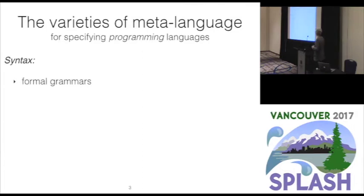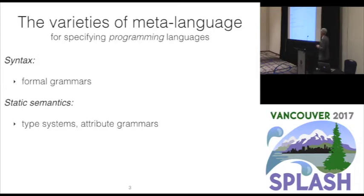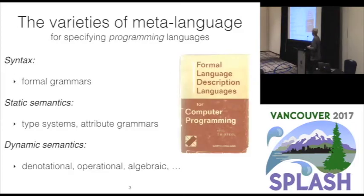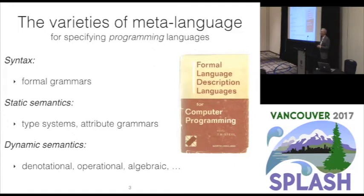What are meta-languages? We have lots of meta-languages around, and I apologize to the meta-modeling community because I'm going to be restricting attention to what I know best — meta-languages for specifying programming languages, and textual meta-languages at that. For syntax we have formal grammars; for static semantics people quite like type systems and attribute grammars. For dynamic semantics there's much more choice: denotational, operational, algebraic approaches, and hybrid approaches. Back in the 1960s, meta-languages was a hot topic, and there was even a conference called "Formal Language Description Languages" held in 1964, proceedings published in 1966.